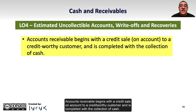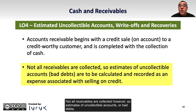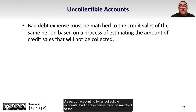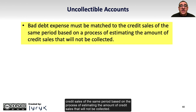Accounts receivable begins with a credit sale on account to a creditworthy customer and is completed with the collection of cash. Not all receivables are collected, however, so estimates of uncollectible accounts or bad debts must be calculated and recorded as an expense associated with selling on credit. Bad debt expense must be matched to the credit sales of the same period based on the process of estimating the amount of credit sales that will not be collected.